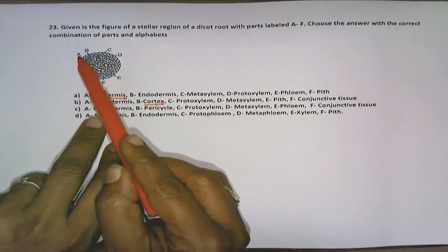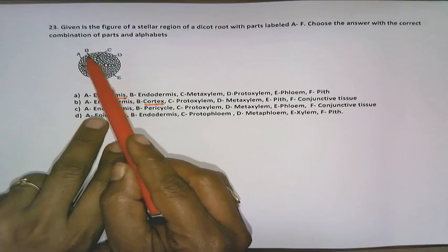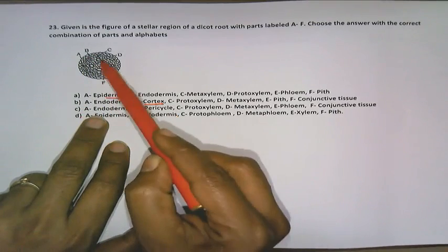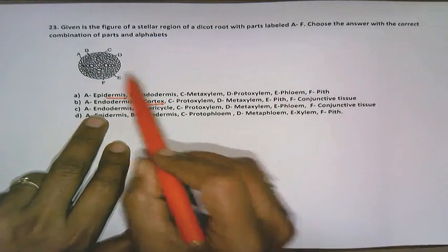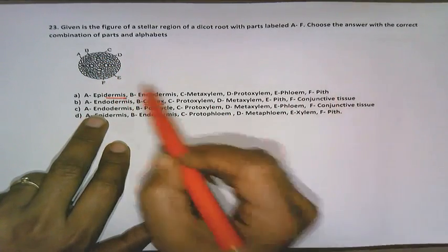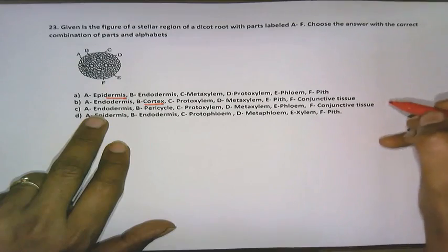As we move on to option C, right, as we see, A is endodermis, B is pericycle, C is protoxylem, right, D is metaxylem, right, E is phloem, right, F is conjunctive tissue, that's right. So option C is right.